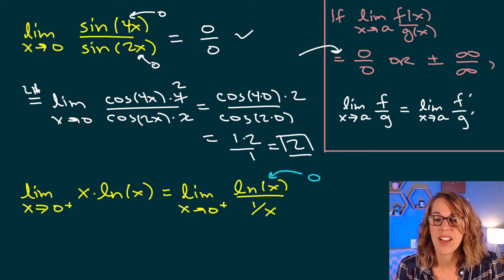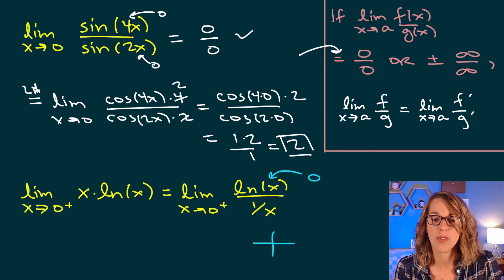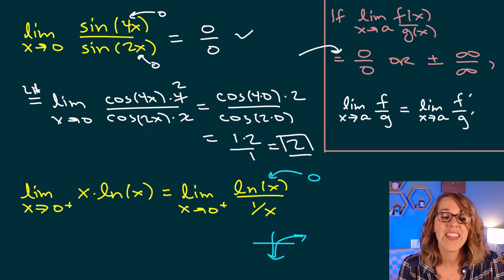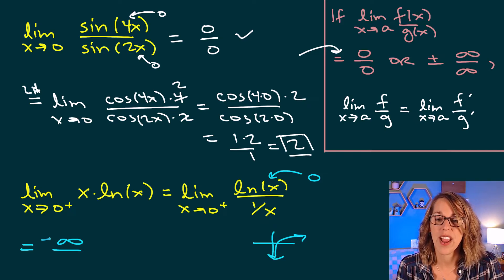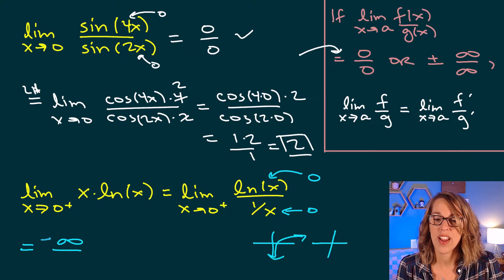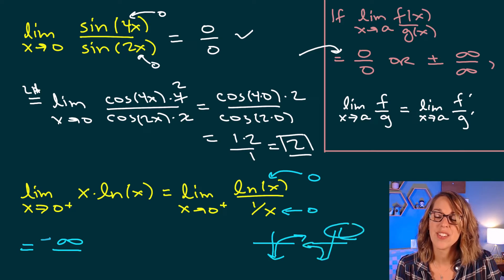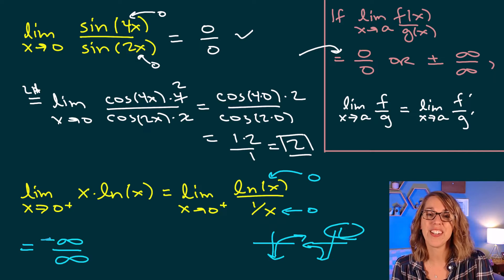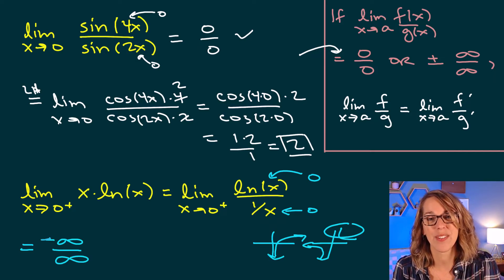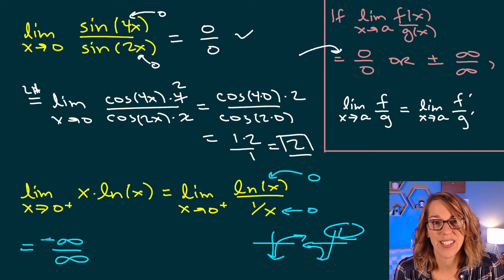As X approaches 0 from the right, the natural log goes to negative infinity in the numerator. For 1 over X, as I approach 0 from the right-hand side, that approaches positive infinity. So I get negative infinity over infinity, which is one of the conditions that satisfies L'Hôpital's rule.